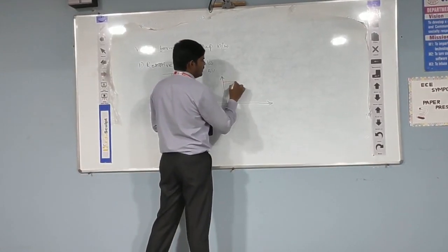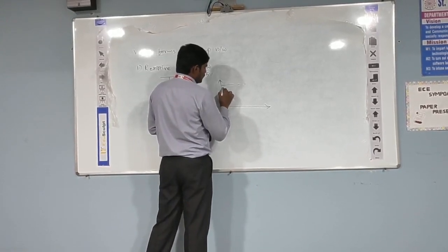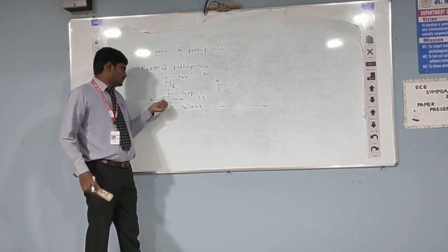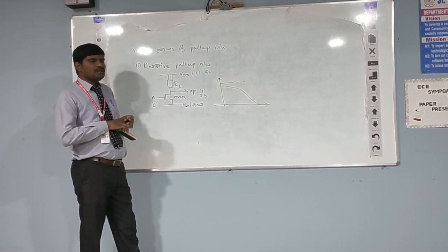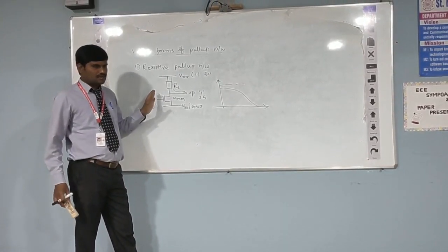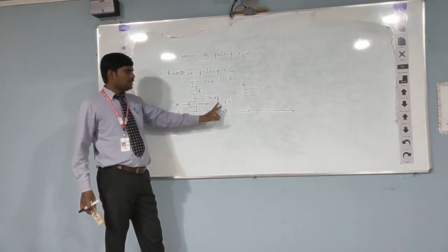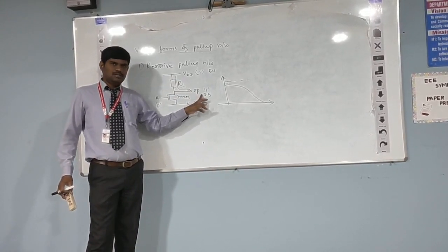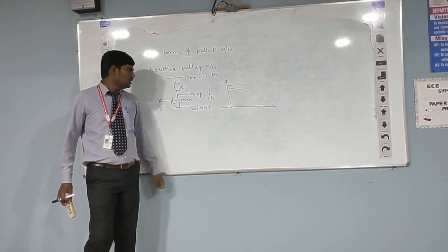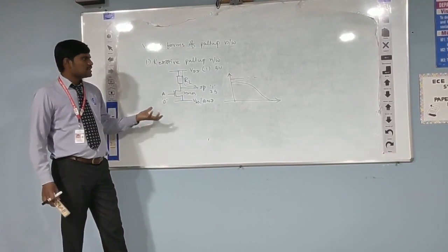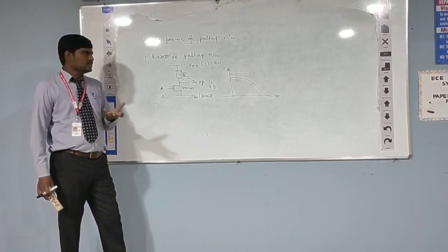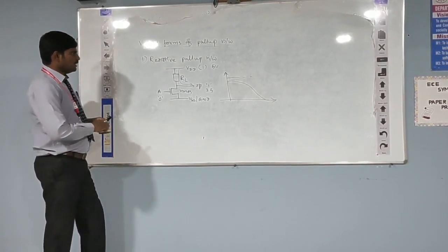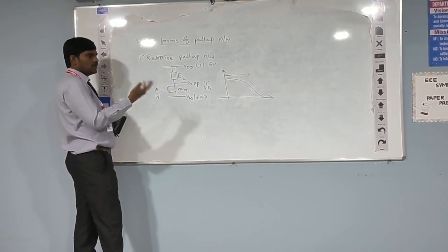So, that means logic 1 you are not going to receive exactly — you are going to receive less than that. And logic 0 will be received correctly. The advantage is that it is simple in construction — a simple resistor and an N-MOS transistor. But the drawback is that you are unable to represent output logic level 1 exactly, because there is a voltage drop across the resistor causing logic level reduction. Also, fabricating a resistor occupies very large area in the IC, which is definitely unwanted. So, we are not going to prefer a resistive pull-up.